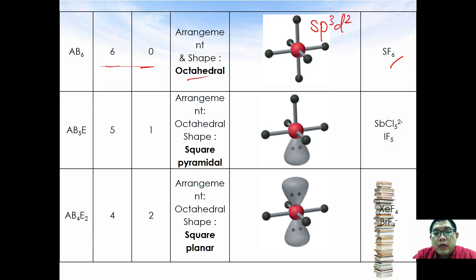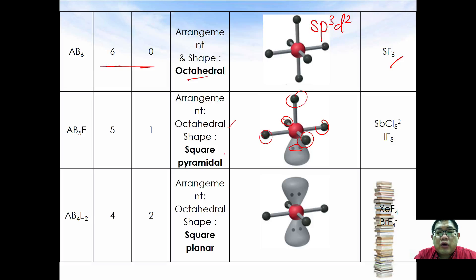If one bond pair is replaced by a lone pair electron, you have one lone pair and five bond pairs. The arrangement is similar to octahedral but the shape is called square pyramidal.